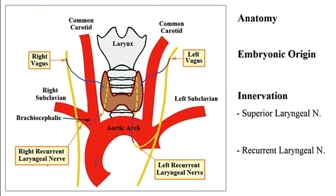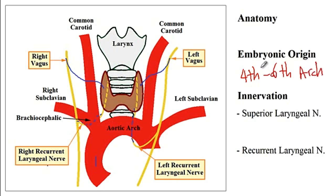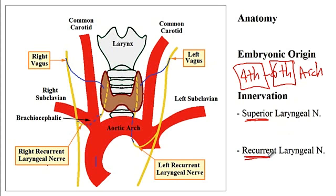As for the embryonic origin, the vagus nerve arises from the fourth as well as the sixth branchial arches. The fourth branchial arch gives rise to the superior laryngeal nerve, while the sixth branchial arch gives rise to the recurrent laryngeal nerve.